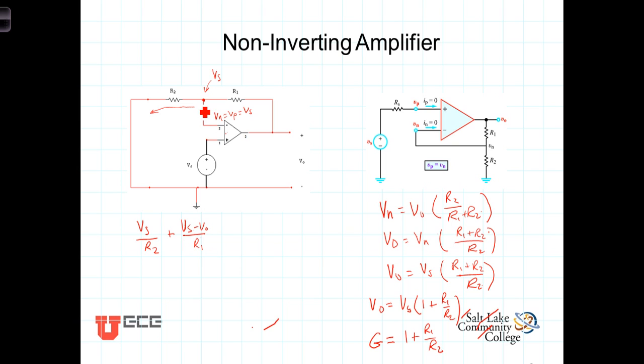And then plus the current going into, or leaving this node and going into the op amp. But our ideal op amp approximation tells us that the current going into the input terminal is 0, so we could write a plus 0 there. But let's leave that off and simply say that the sum of those two currents must equal 0.